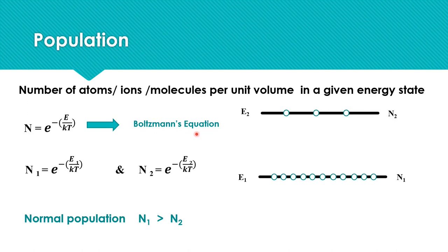If number of molecules in lower level represented by N1 and upper by N2, according to Boltzmann equation, N1 = e^(-E1/kT) and N2 = e^(-E2/kT). Normally, N1 will be greater than N2. This population with more number at lower energy level is known as normal population.